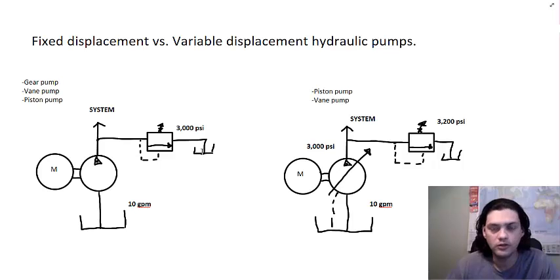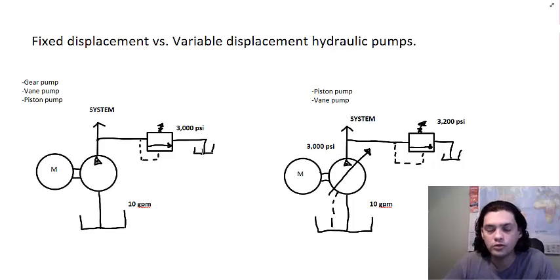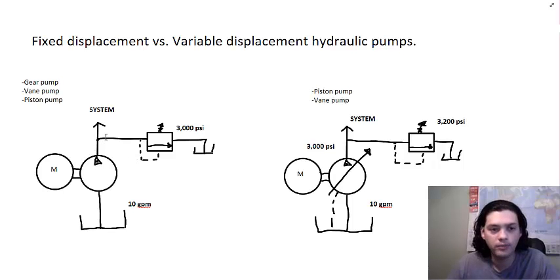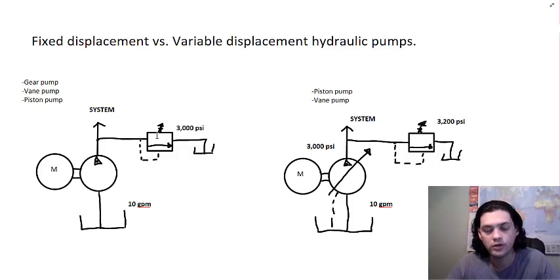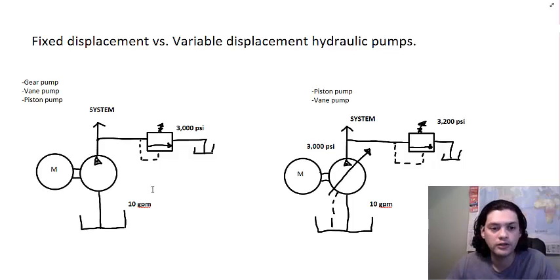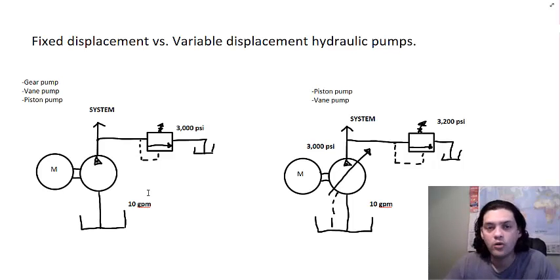This type of system is normally used in applications where you do not have long periods of running time. The reason is that any time you dump fluid under pressure through the relief valve, you're wasting horsepower. You do not want to do that too often or for too long. You're dumping 10 GPM at whatever maximum pressure you're working at, and what happens is you're generating heat and wasting horsepower — energy you're paying for but not using.